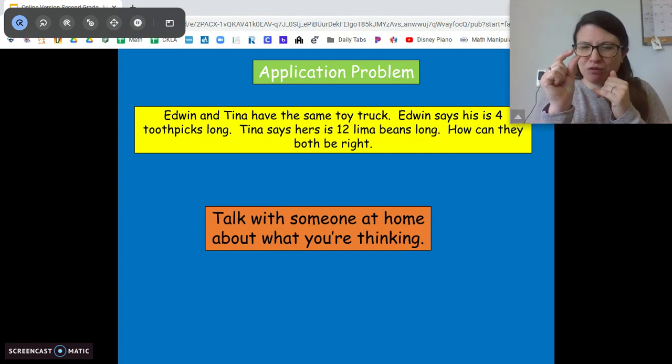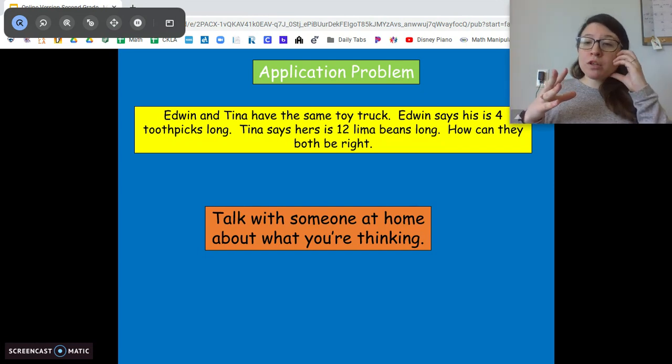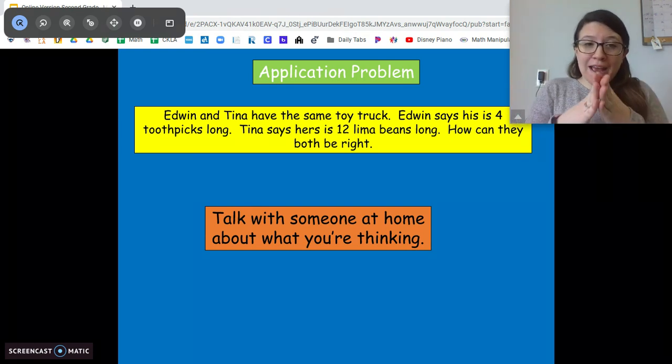The toothpick is much longer. The lima bean is pretty tiny. So they both could be right. Edwin had only four toothpicks because toothpicks are longer and Tina had 12 tiny lima beans. So they had different units of measurement. So they both could be right.